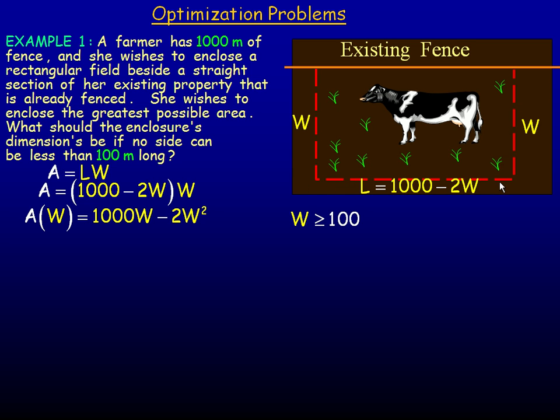So if this side was 100, we'd have 900 for these two W's combined. So if the length's 100, the two W's would be 900. So 100 plus 900, that's a thousand. So dividing by 2, the largest possible width is 450. So if we had 450 here and 450 here, that's 900.